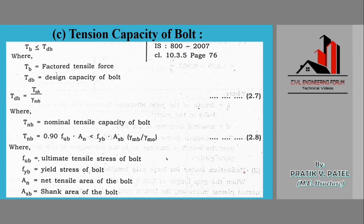In order to find the bolt value, we have to find three different things: first is the shear capacity of the bolt, second is the bearing capacity of the bolt, and the third is the tension capacity of the bolt. For the first two, we have already discussed everything. In this lecture, we understand how to calculate the tension capacity of the bolt.